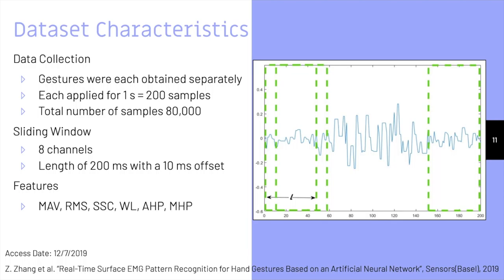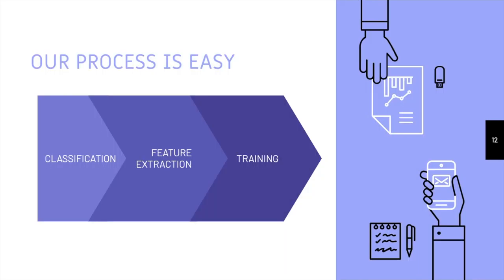The first segment is popped out of the window and a new one is added at the end. Features are extracted again, and this process runs in a loop until the last window is processed. Features we use include mean absolute value, root mean square, slope sign change, waveform length, and Activity and Mobility Hjorth parameters. The feature extraction algorithm was applied to manually classified data, and the resulting feature vectors were fed into our neural network.